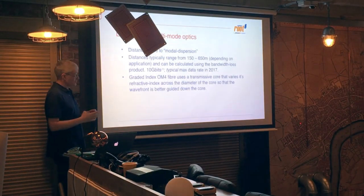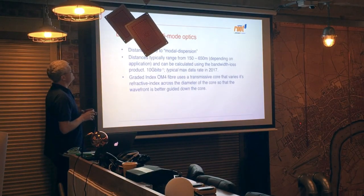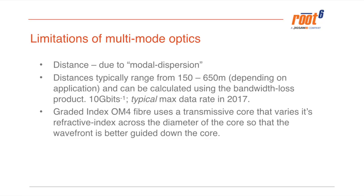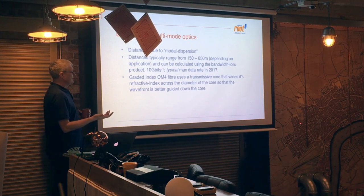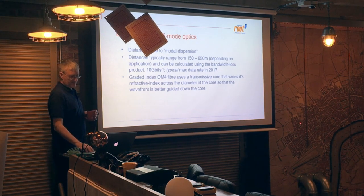The limitations of multimode optics are modal dispersion — this smearing of the waves travelling down the cable limits the distance. Those figures of 150 and 650 metres were very typical for OM3; with OM4 graded-index fibre we can get a lot further. But we're limited data-rate-wise as well — 10 gigabits per second is about where we top out. With single-mode, obviously the sky's the limit.